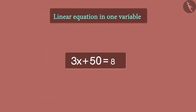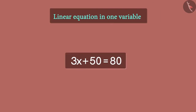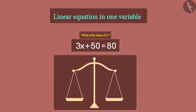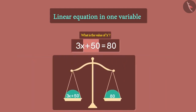Look at this equation. We saw this equation in our last session. Now let us try to find the value of x in this equation. We can think of an equation as a weighing balance. If the weight on both sides of the scale are the same, then the two sides are in balance. An equation is like this — the value of the expression on the left-hand side is balanced exactly with the value of the expression on the right-hand side.